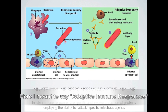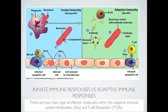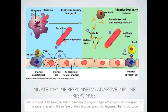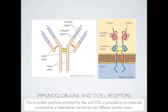Adaptive immune responses are specific and involve the action of proteins displaying the ability to attack specific infectious agents. There are two main types of effector molecules within the adaptive immune system: antibodies and T cell receptors. Both antibodies and T cell receptors have the ability to recognize only one type of antigenic determinant, or molecular shape, on the surface of the infectious agent that triggers their production. This incredible specificity is provided by a heterodimer formed by two different protein chains.